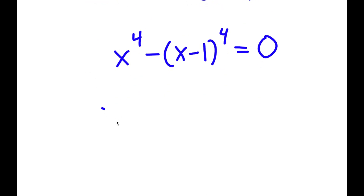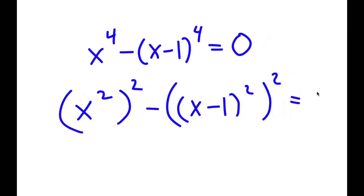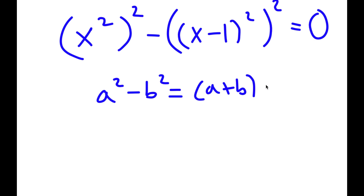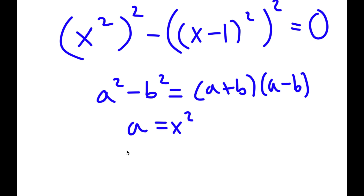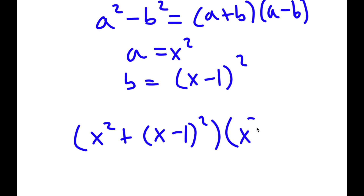x to the power of 4 is the same thing as x squared, squared. And x minus 1 to the power of 4 is the same thing as x minus 1 squared, squared. If I have something in the form a squared minus b squared, this equals a plus b times a minus b. In this case, a is x squared and b is x minus 1 squared. So I have x squared plus x minus 1 squared times x squared minus x minus 1 squared equals 0.